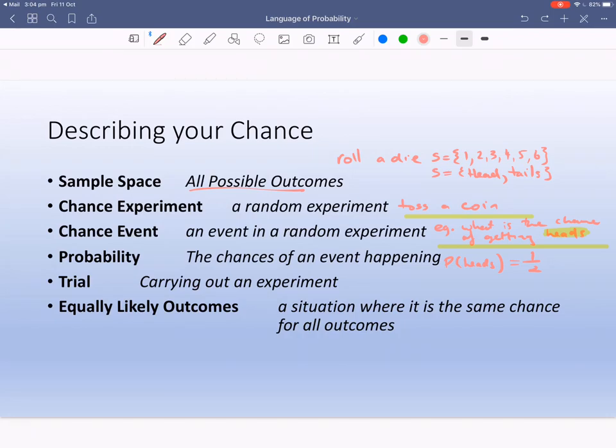And then the last one is equally likely outcomes. It's a situation with the same chance for all outcomes. The easiest one to do here is just tossing a coin. It's equally likely to get heads. Or is it equally likely to get tails? So just make sure. So that would be an example of that. Make sure you write everything that's typed up in this page. And then do some examples that will help you.